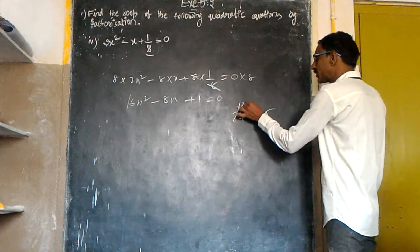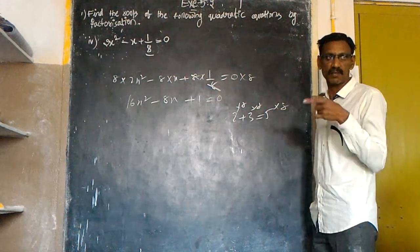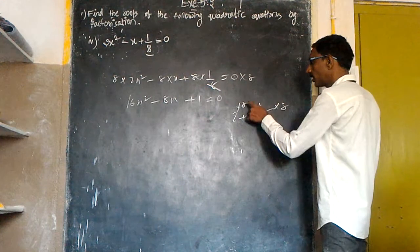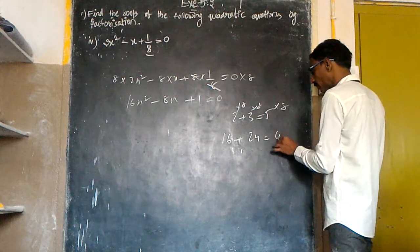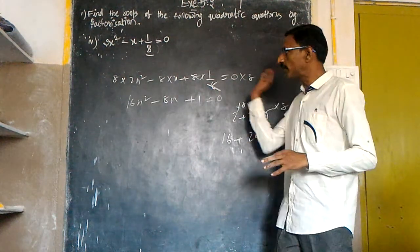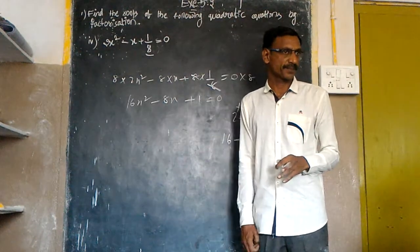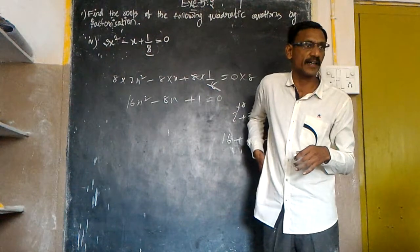Is there any change or not by multiplying with 8? By multiplying with 8, we get the equation remains the same. 8 times 2 is 16, 8 times 3 is 24, 8 times 5 is 40. 16 plus 24 equals 40. So we can multiply with any number but I would like to take 8 because I want to eliminate the 8 here.